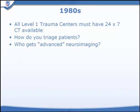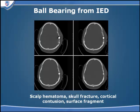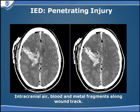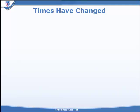Since the early 1980s, all level 1 trauma centers have had CT available 24/7, and it's very good for triaging patients. We can easily identify scalp swelling, a metallic density such as a ball bearing, do 3D reconstructions to identify the ball bearing impacted on the skull, and take advantage of cross-sectional imaging to identify the wound track through the patient in a penetrating fragment injury.